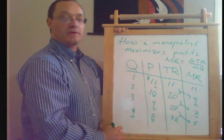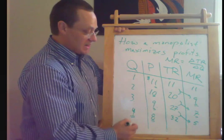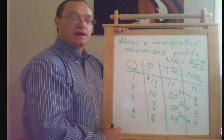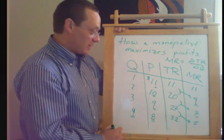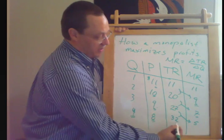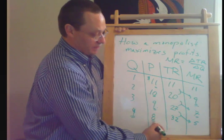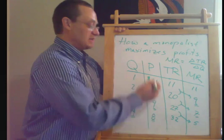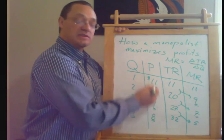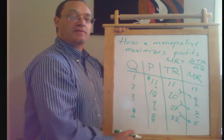And so on and so forth. You can see that if we kept on going this way, we would eventually get into a situation where we would have negative marginal revenue. Because eventually, the amount that we would gain from selling one more unit would be less than the loss, the lower amount that we would get for the previous units.